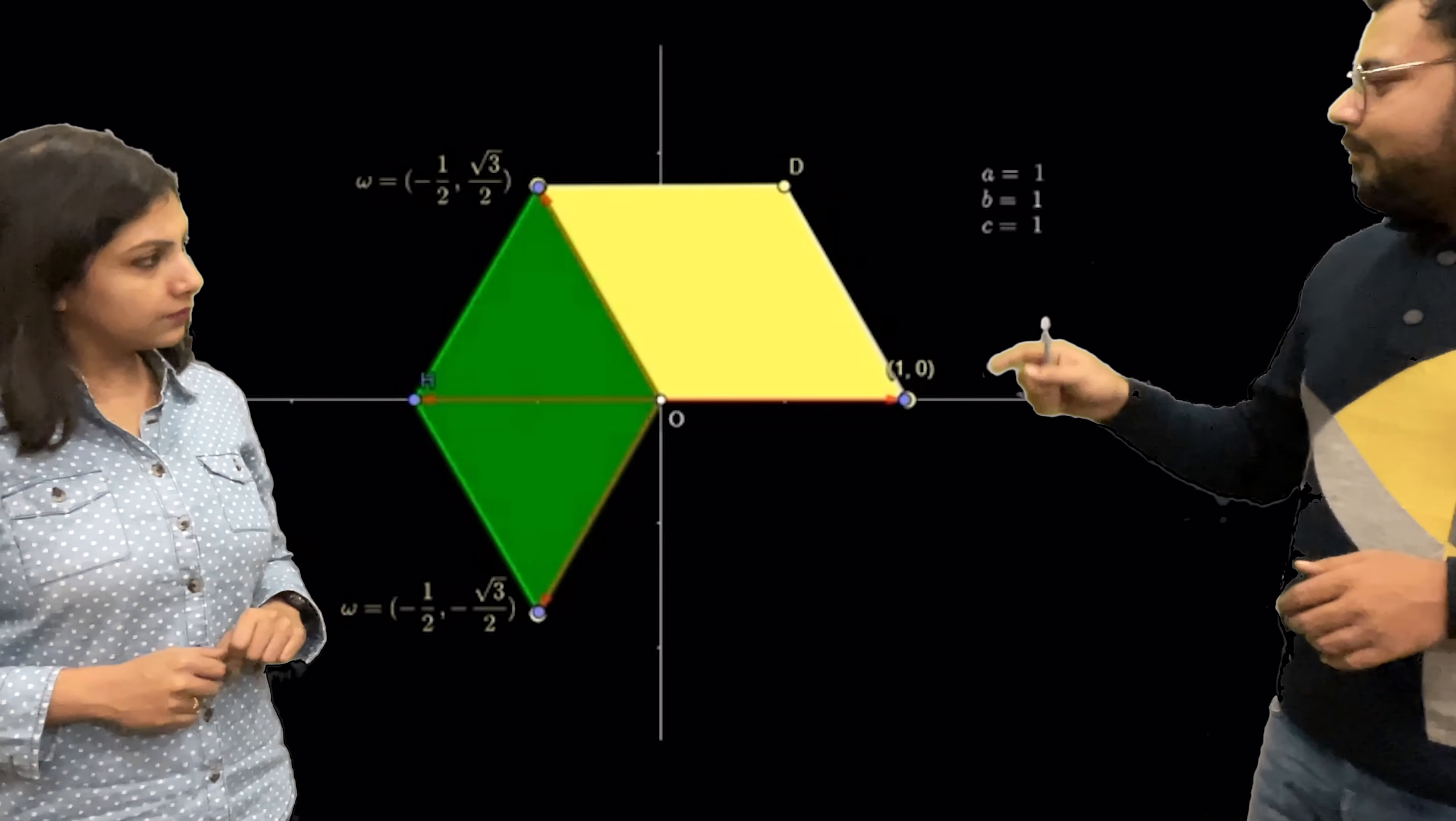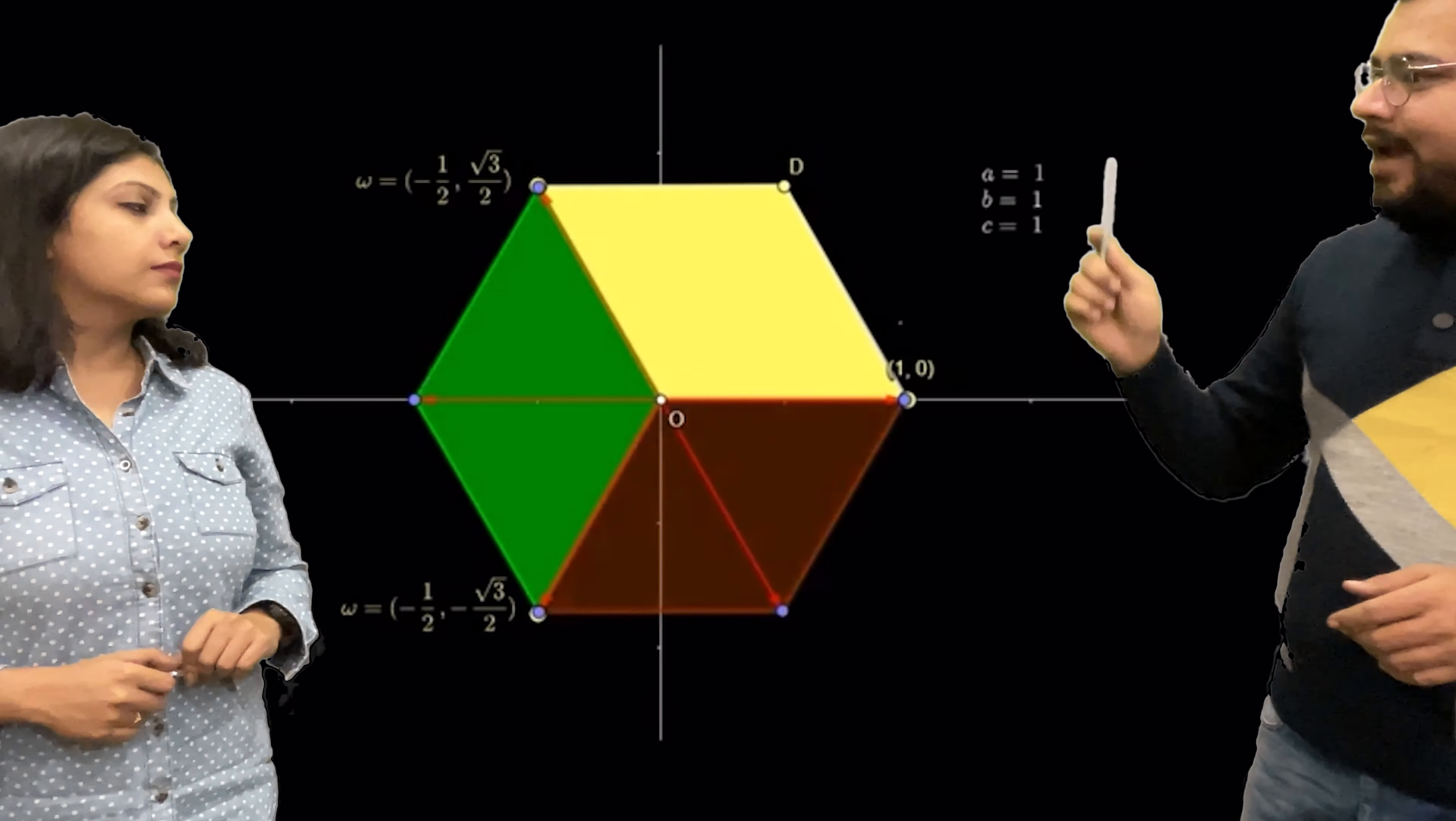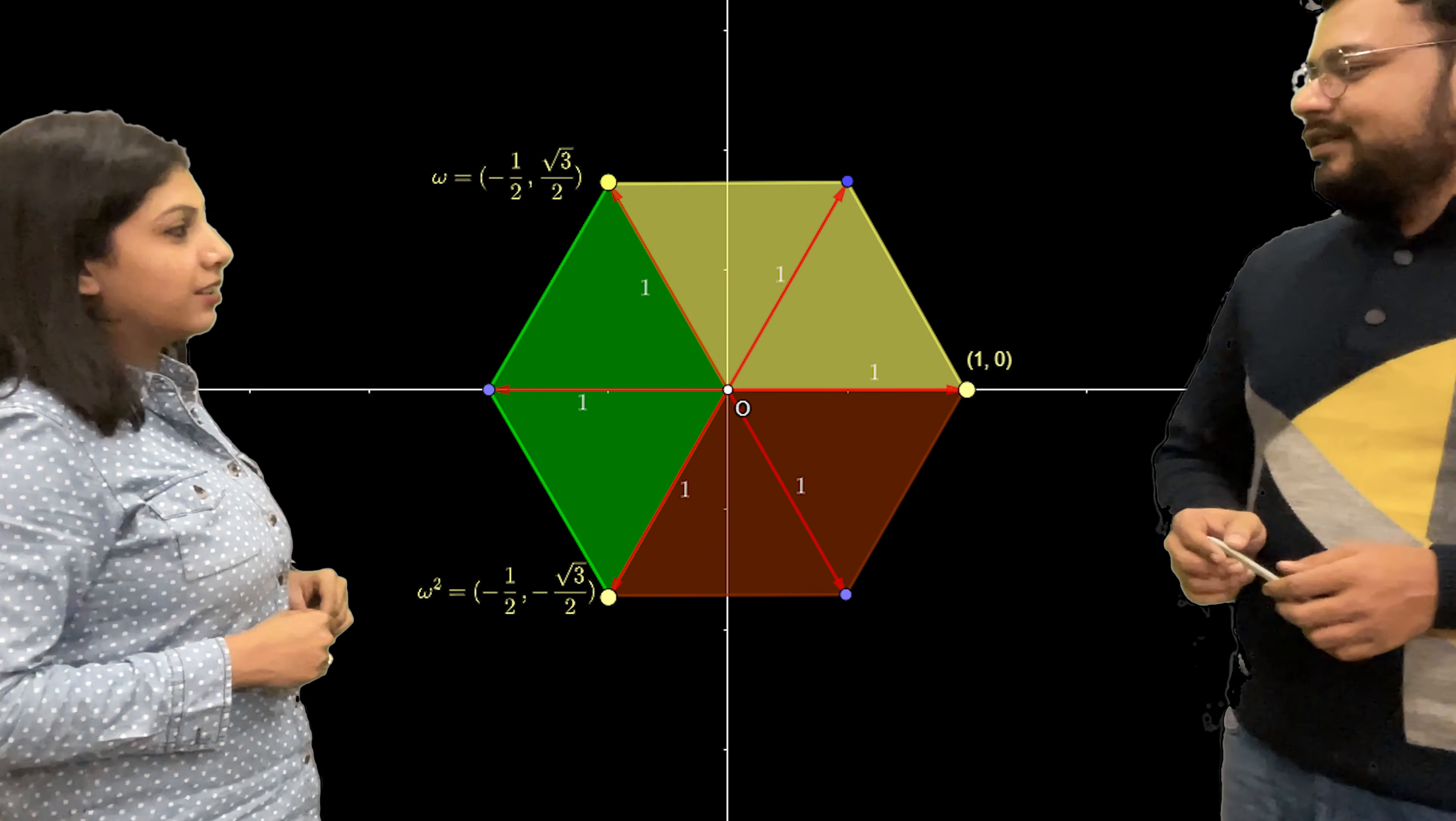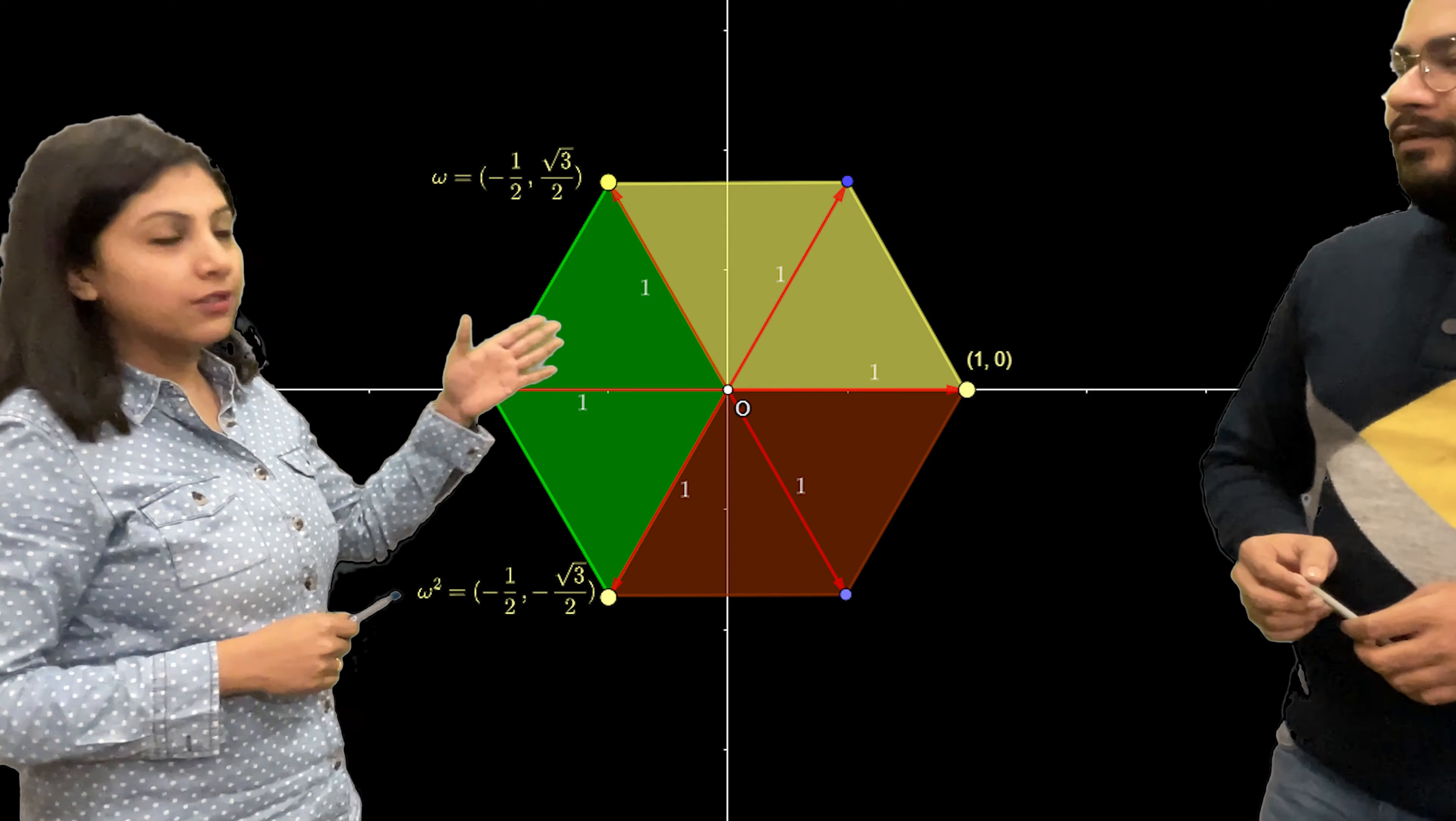Now if we do the same, if we add a and c omega square, we get the other parallelogram. And similarly for b omega and c omega square, if we add them, we get the other parallelogram. So what is it now? Oh, it's a hexagon now. So we can easily find out the area. It is made up of six equilateral triangles having sides of length one.